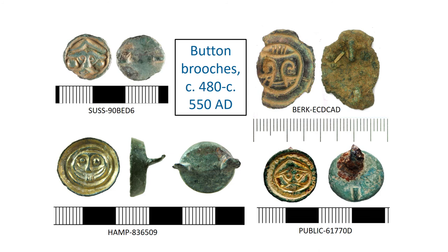The person depicted on button brooches has been suggested as Woden. Kevin Leahey has pointed out that one way of recognising Woden is to look for an absent, damaged or odd-looking eye — Woden famously swapped one of his eyes for extra wisdom. It's always a good idea when looking at an early medieval depiction of a human face to have a particularly good look at the eyes. Button brooches were originally studied by Avent and Everson in 1982, and more recently this typology has been slightly revised by Suzuki, whose book is excellent with lots of very clear photos.